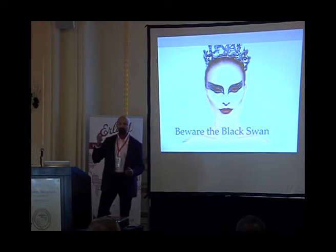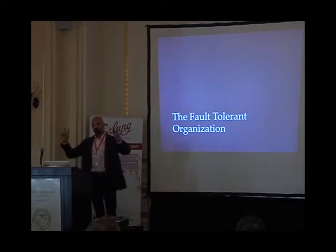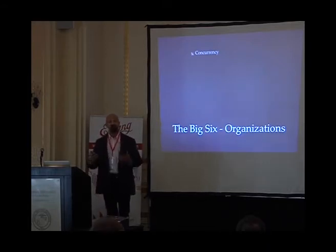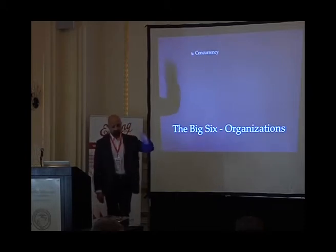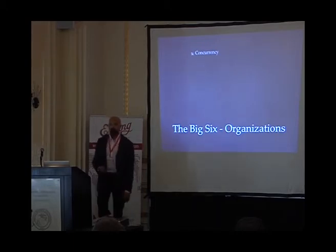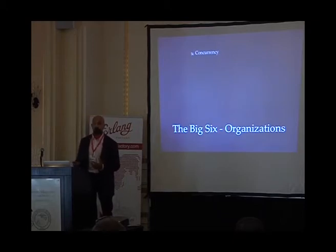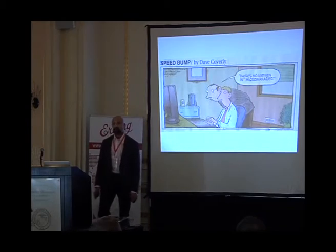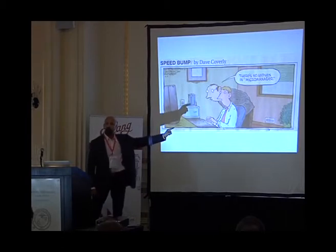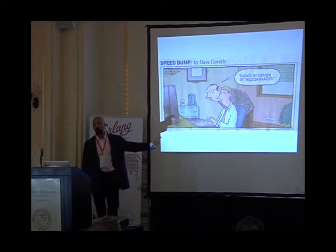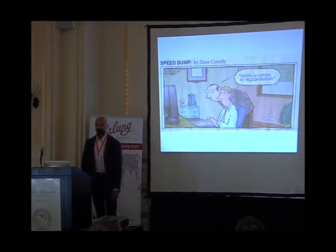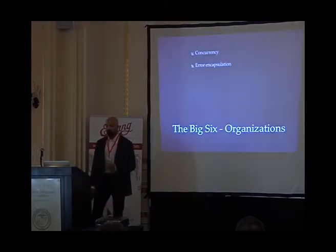Remember the big six — but this time think of yourself as part of a company, not just building a piece of code: fault-tolerant organization. Concurrency: can your different groups, teams, or people work on multiple things at the same time? Do you have the micromanaging boss where nobody can do anything without approval? If you work for any company with more than 100 people, you've got some variant of this somewhere. And error encapsulation: if QA is running behind, can we continue with everything else?